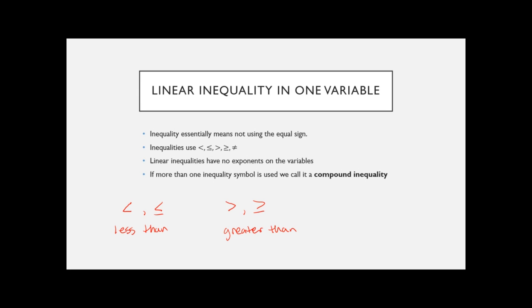Linear inequalities in one variable have no exponents on the variables, just like linear equations — that's why they're called linear. If you have more than one inequality symbol in use, it's called a compound inequality. An example would be 2 is less than x, which is less than or equal to 4, meaning x is between 2 and 4.